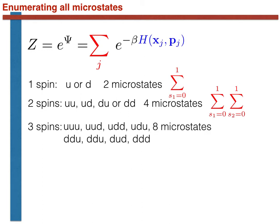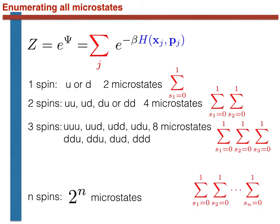Now suppose that we have three spins. There are now eight distinct microstates that the system can be in, which are listed here. Furthermore, we can sum over these eight distinct microstates by performing the triple sum over the three spin variables s1, s2, and s3, as shown here. We can generalise this by recognising that if we have N spins, we have 2^N microstates in total. To calculate the partition function, we will have to do a sum over N spin variables, as illustrated by the symbol shown at the bottom right of this slide.